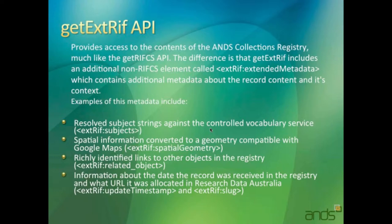And the connections themselves — when we get a key in the RIFCS and the relationship — we actually go and resolve that to a person's name, the status, and title as well. We also store information about when the record came in and out of the registry, which we can use later on in searches.